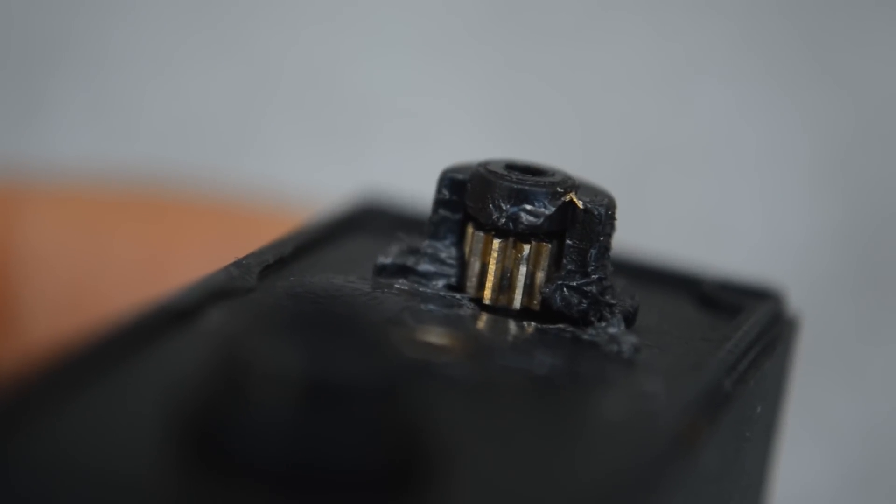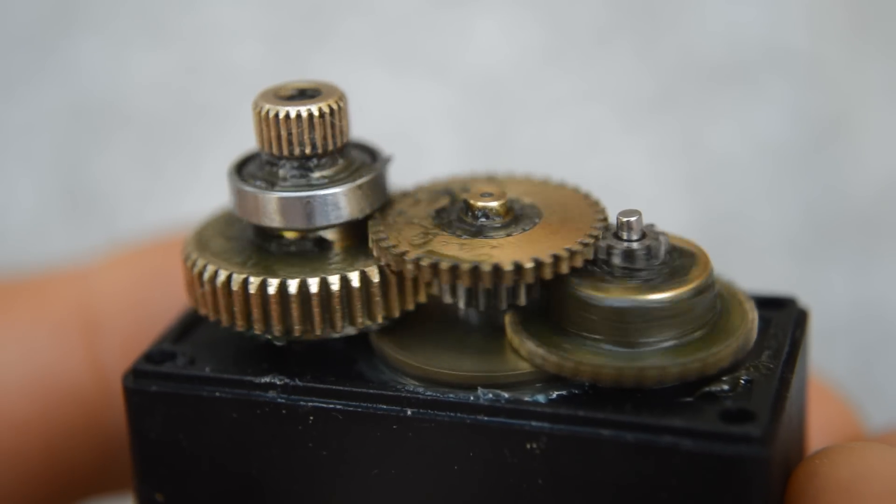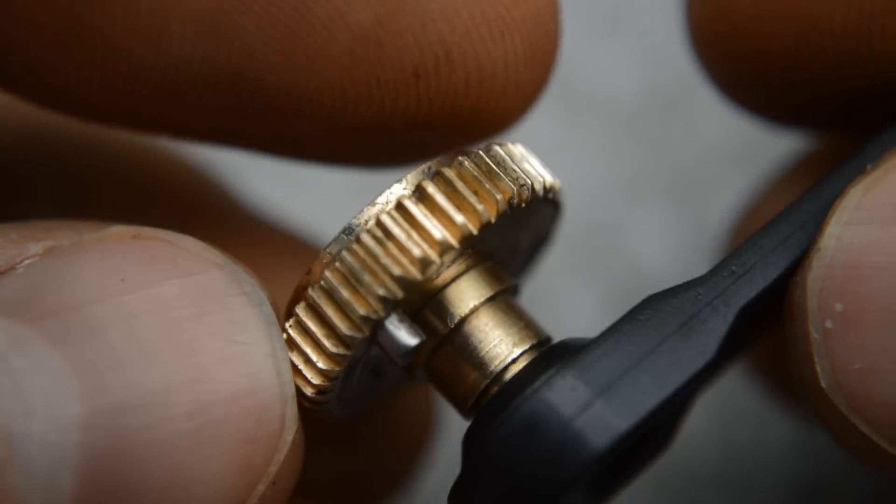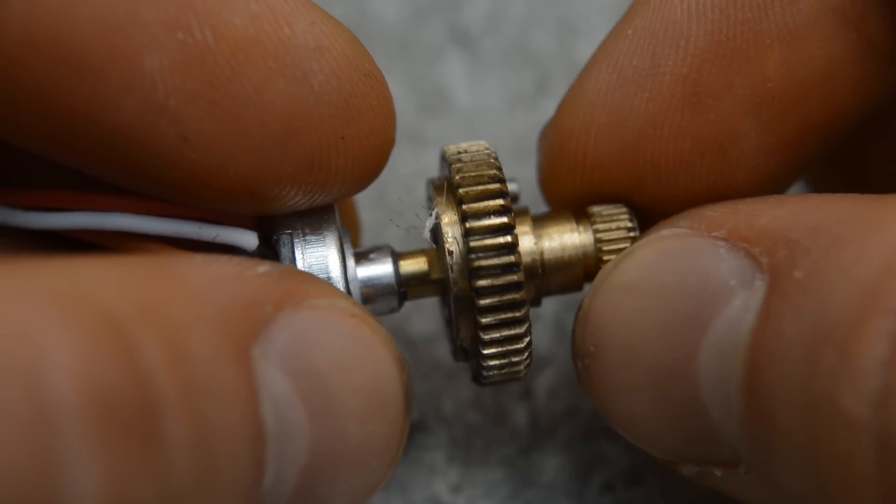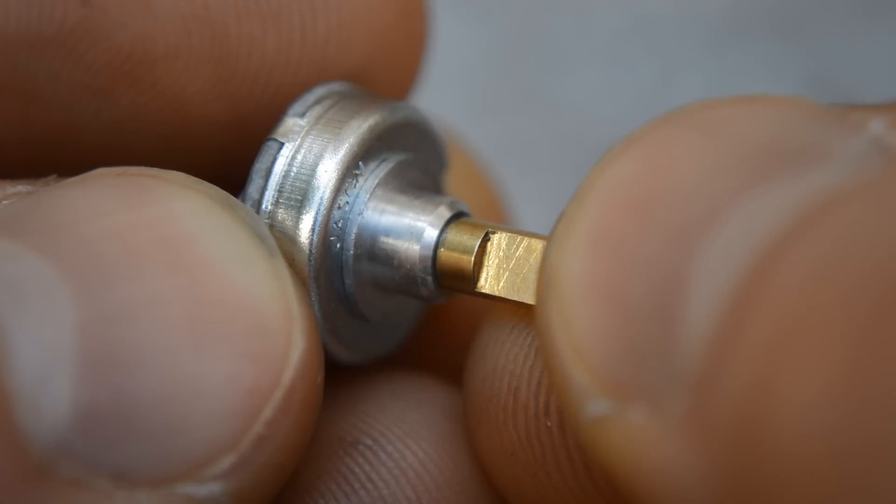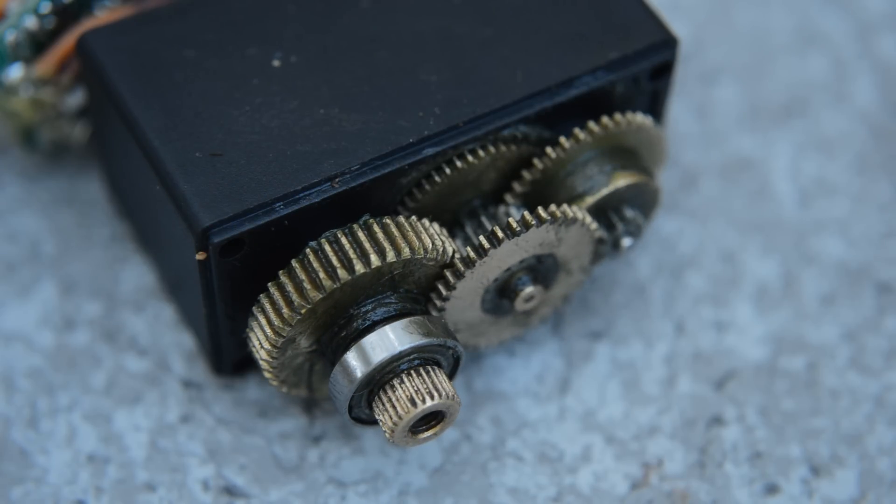So what the servo will do is it'll start spinning the motor in one direction or the other to spin all the gears around, ultimately spinning the main drive gear. And the potentiometer is connected directly up to that main drive gear, so as the main drive gear spins, so does the potentiometer. And then as soon as the potentiometer reaches that goal you gave it, the servo is going to cut all power to the motor and stop spinning.